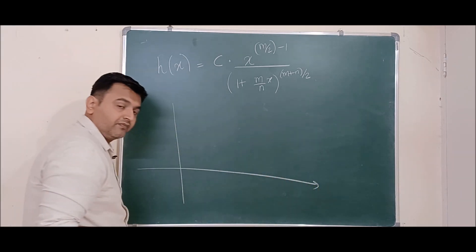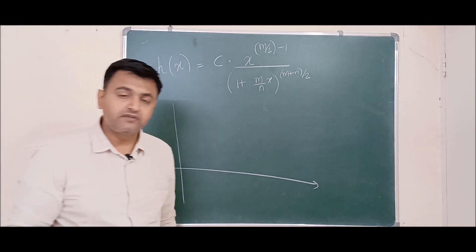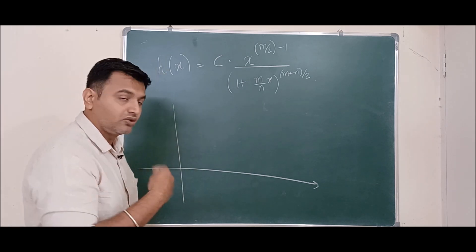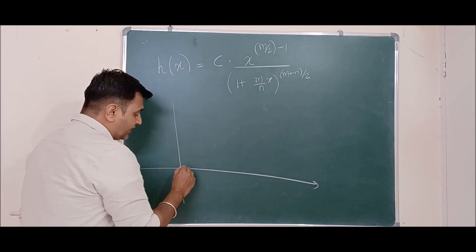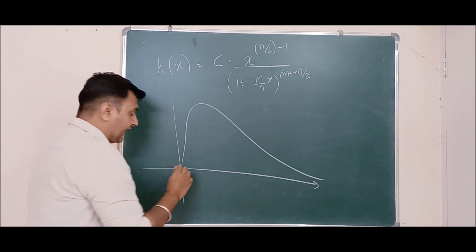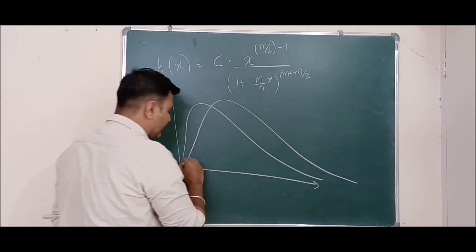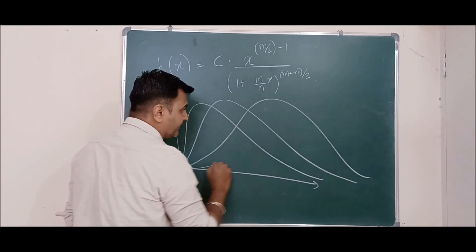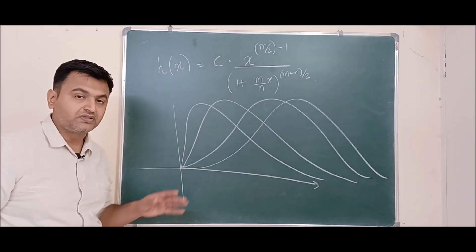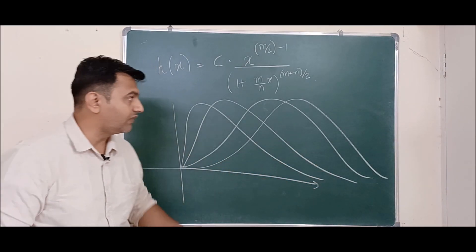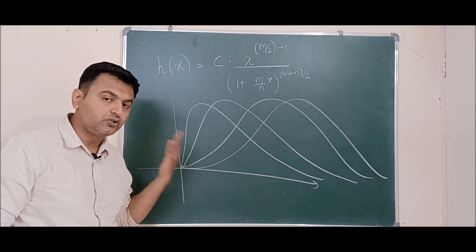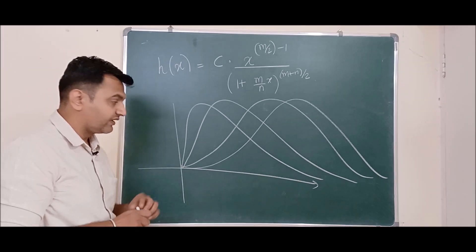How does the F distribution look graphically? Since it is the ratio of two chi-square variables, F is always non-negative — chi-square is always positive, so the ratio is always positive. Same as chi-square, the F distribution is skewed towards the right. As the degrees of freedom keep increasing, the F distribution will approach the normal distribution. For smaller degrees of freedom it is right-skewed, but for larger degrees of freedom the graph becomes more bell-shaped.